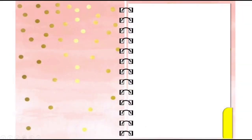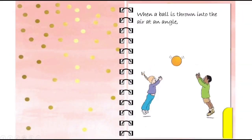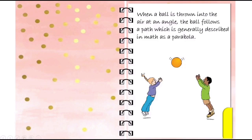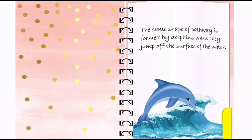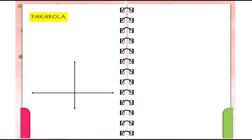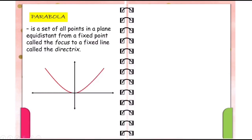The second conic section we shall talk about is the parabola with vertex at the origin. Did you know that when a ball is thrown into the air at an angle, the ball follows a path which is generally described in math as a parabola? The same shape of pathway is formed by dolphins when they jump off the surface of the water. A parabola is a set of all points in a plane equidistant from a fixed point called the focus to a fixed line called the directrix.